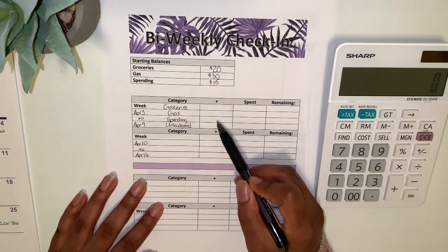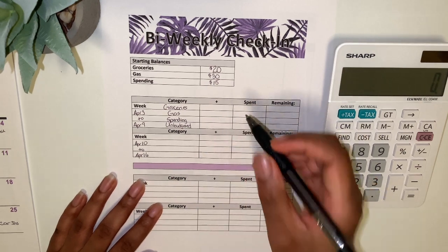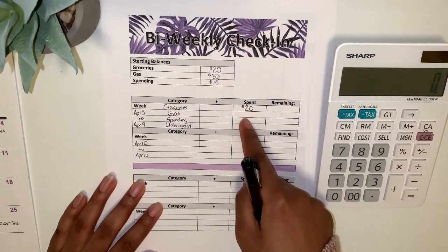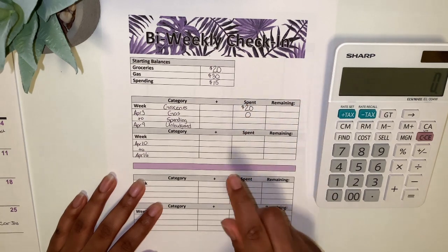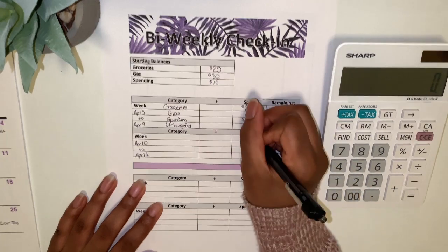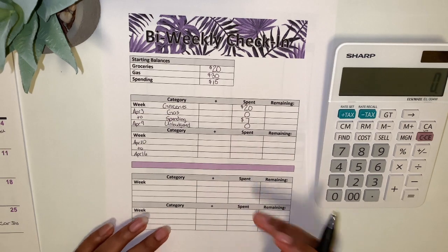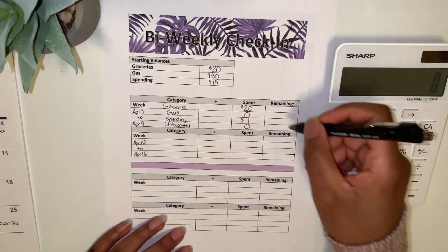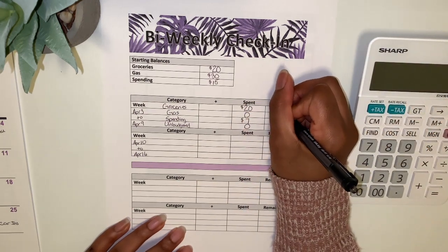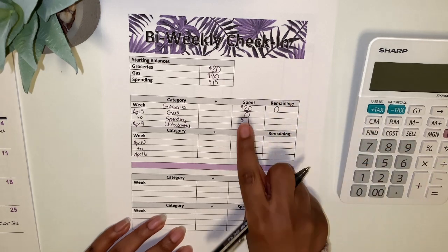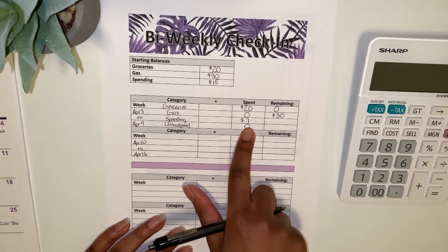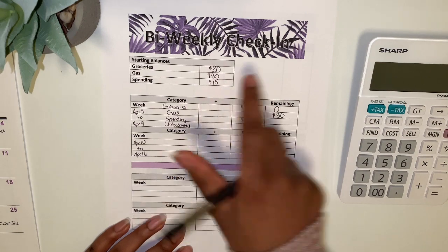Okay, so as I said, I did not get paid this week, so no money got added to these envelopes. However, I did spend the $20 that was in groceries. Gas, I did not spend anything for gas, I was in the house. Spending, I spent $7, and unbudgeted I did not spend anything. I just keep track of my spending on my phone and I list them all, and then I check in when I can. So remaining, I had zero for groceries, gas I still have my $30.